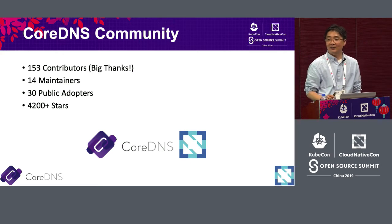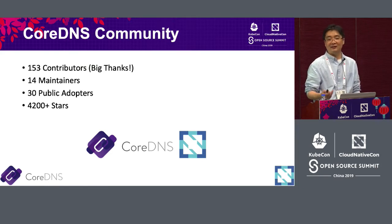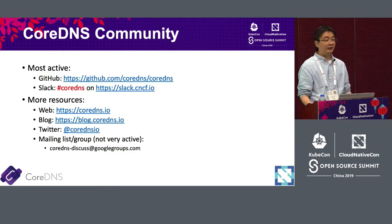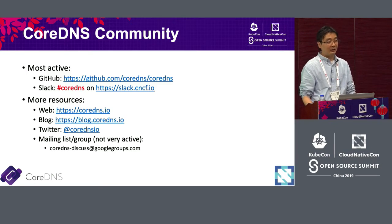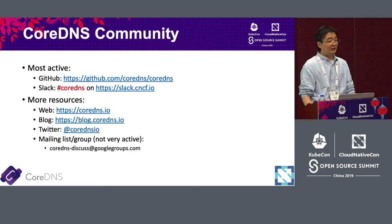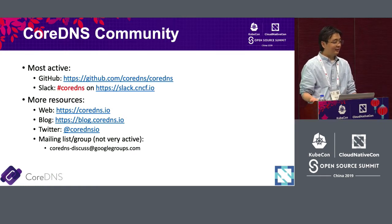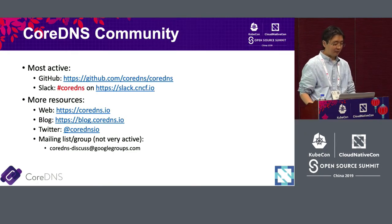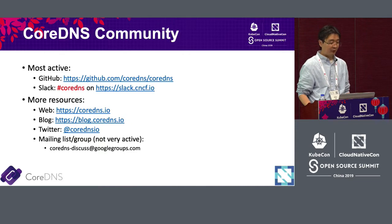If anyone feels CoreDNS is helpful and you want to help, you can push the star button on GitHub. With respect to community, the most active channel is GitHub — maintainers are available there most of the time. We also have a Slack channel as part of CNCF. It's less popular nowadays since people use different messaging platforms, but it's still an active channel you can utilize.